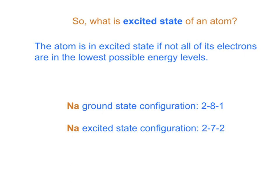The atom is said to be in the excited state if not all of its electrons are in the lowest possible energy level. Consider this example of sodium. The ground state configuration of sodium is two, eight, one — two electrons on the first energy level, eight electrons on the second energy level (which is the maximum number the second level can hold), and one electron on the third level.